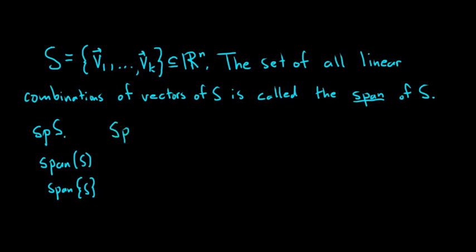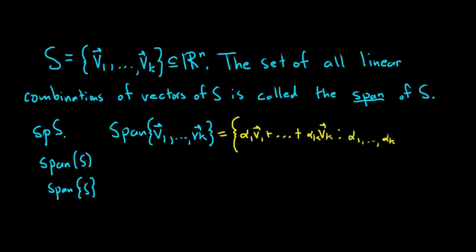You can also write span and then you can have the vectors there, so v1 to v sub k. You can actually write down what it is. Watch this is equal to, so it's the set of all linear combinations of these vectors. So we can write it as alpha 1 v1 plus dot dot dot plus alpha k v sub k such that alpha 1 to alpha sub k are real numbers.